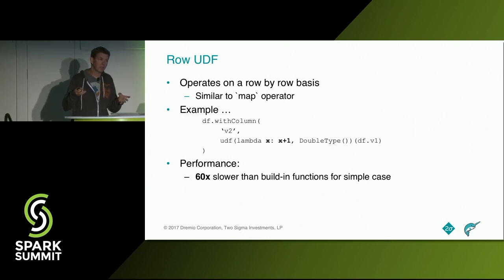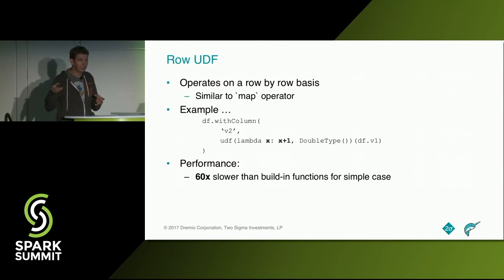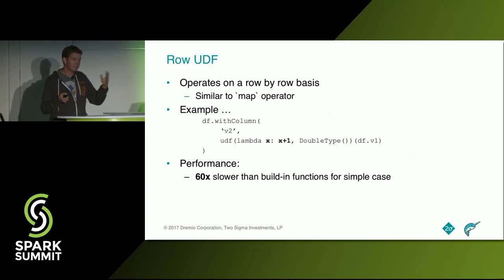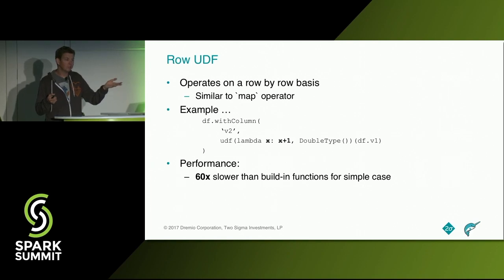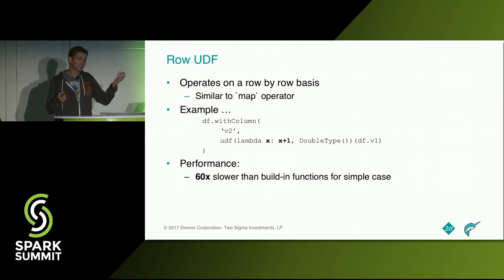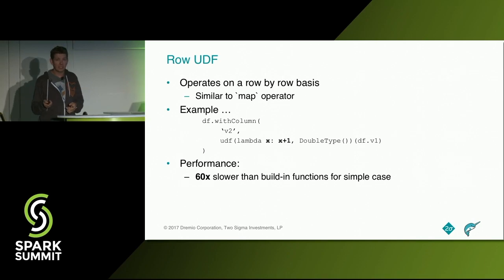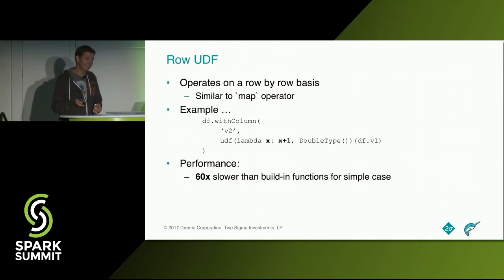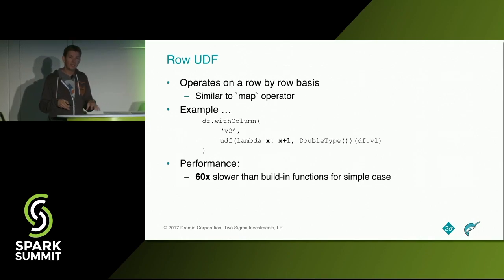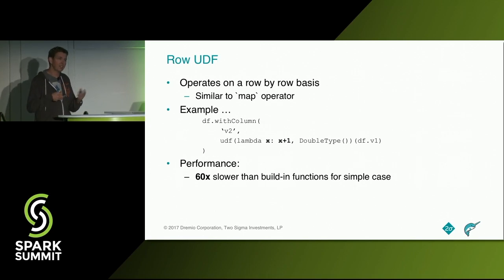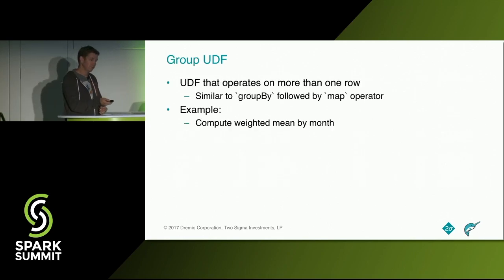The row UDF is similar to what you do in Spark with a map operator and passing a function. In this example, we have a PySpark DataFrame. We're creating a new column V2 by applying the UDF defined as the lambda expression X equals X plus one to the column V1. The big downside of this is it's about 68 times slower than doing the same thing in Scala, due to a bunch of overhead we're going to talk about.